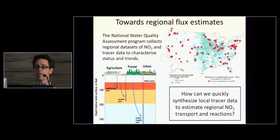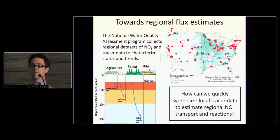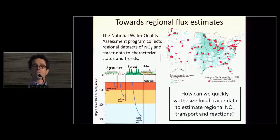This map on the upper right shows locations where there's nitrate above the MCL. The challenge is how can we quickly synthesize this data, which is collected locally around well screens, in a regional context to come up with estimates of nitrate transport and reactions.